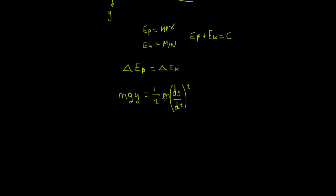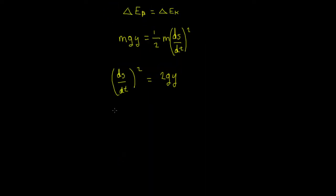If we cancel out the m's and rearrange, we get (ds/dt)² = 2gy, so ds/dt equals the square root of 2gy.